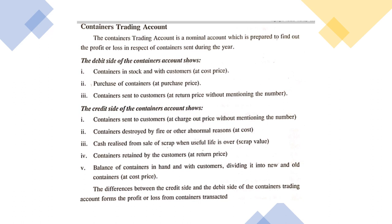On the credit side, containers sent to customers is already discussed — on the debit side it is a provision, and on the credit side it is the actual amount, with units not mentioned. The amount of goods sent to customers is recorded at charge out price. Containers destroyed by fire or other abnormal reasons are recorded on the credit side at cost price. Cash realized from the sale of scrap — when the useful life of containers is over — is recorded on the credit side at scrap value.